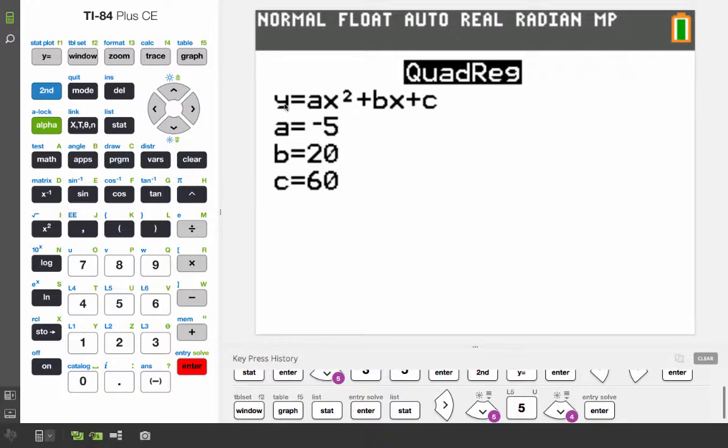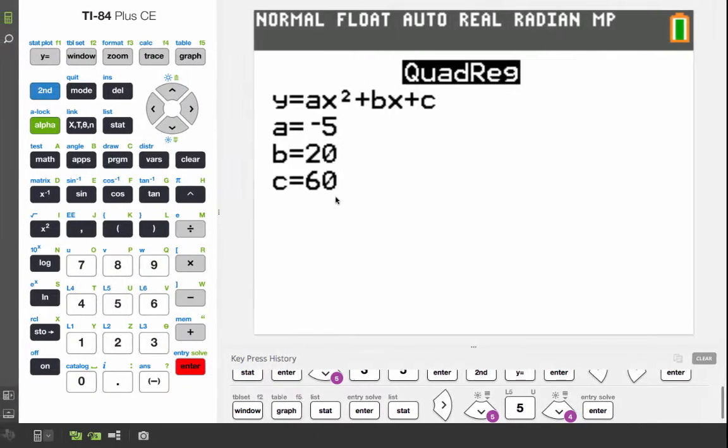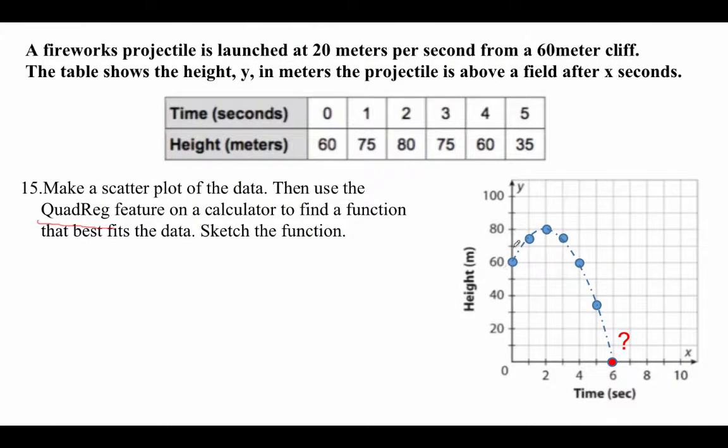And what we have here is y is equal to ax squared plus bx plus d. And the coefficients are the values, coefficients negative 5, 20, and 60, are listed. So we have to type that in now.